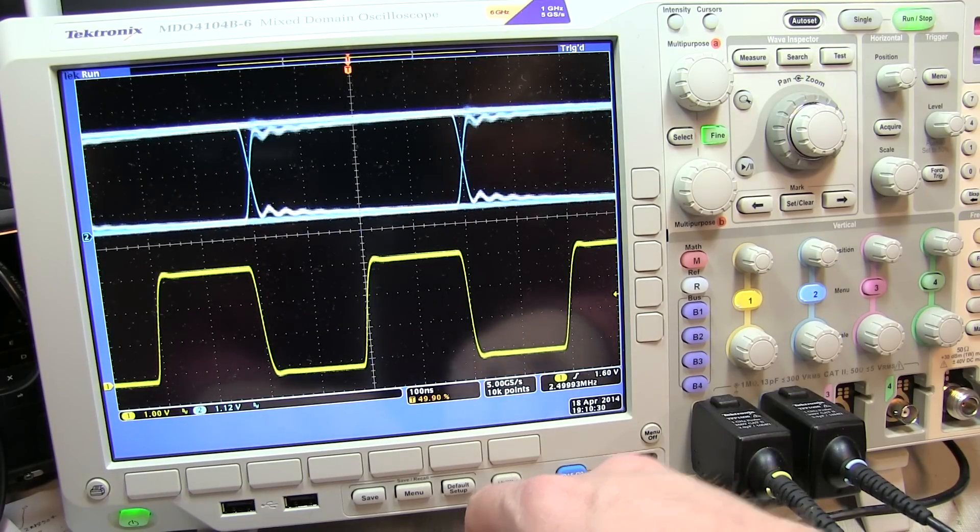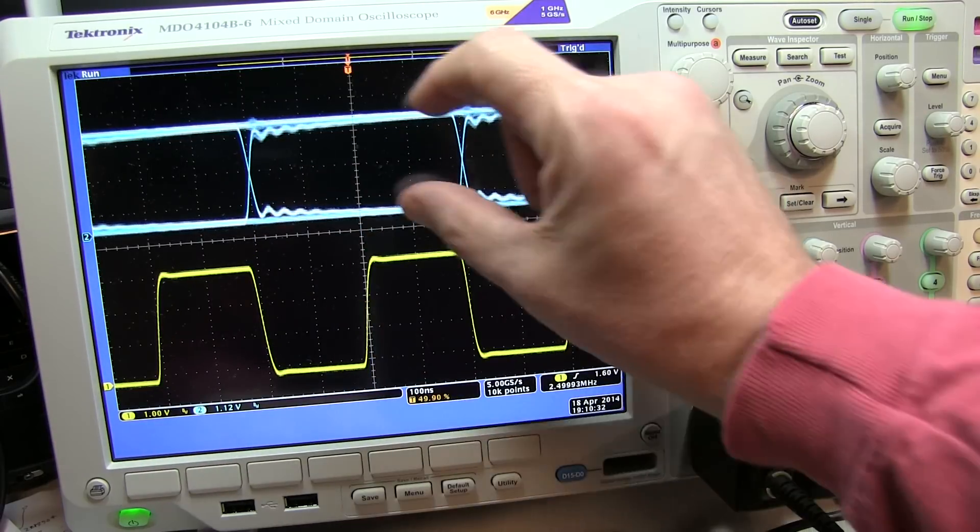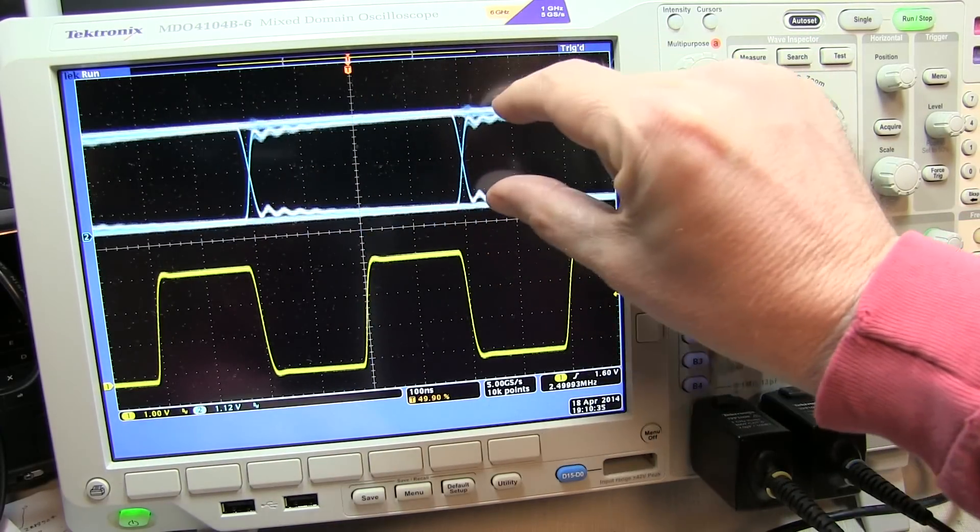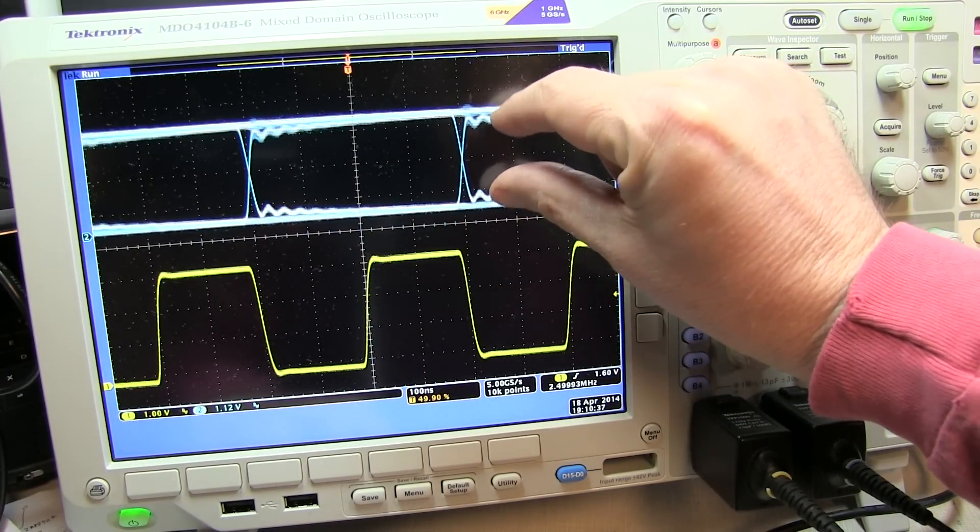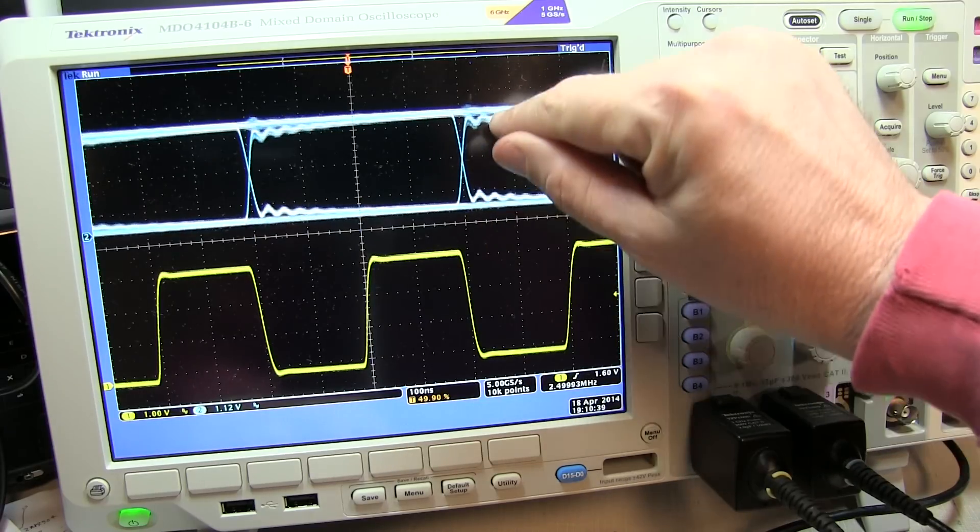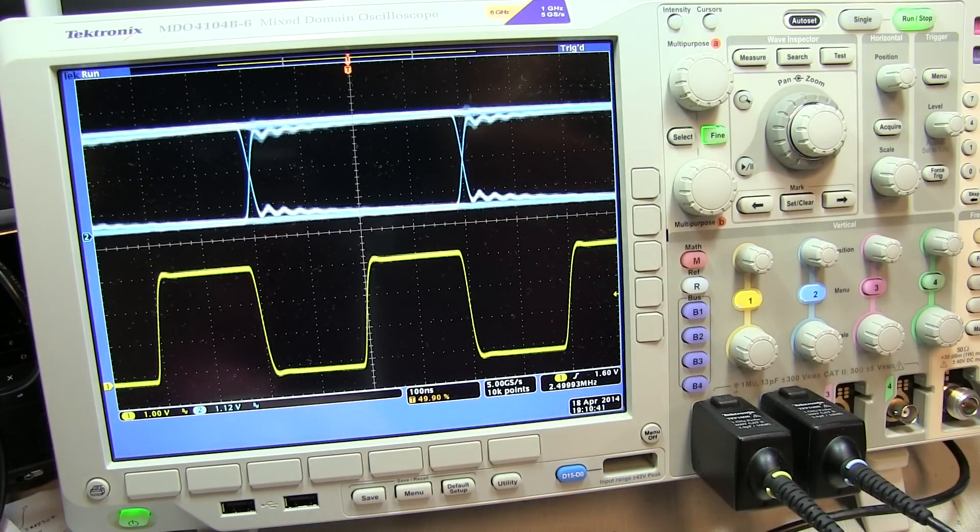It's still a pretty good looking eye pattern here. But you can see how, as I made these distortions in the signal, that the vertical distance or voltage between a 0 and 1 has now changed.